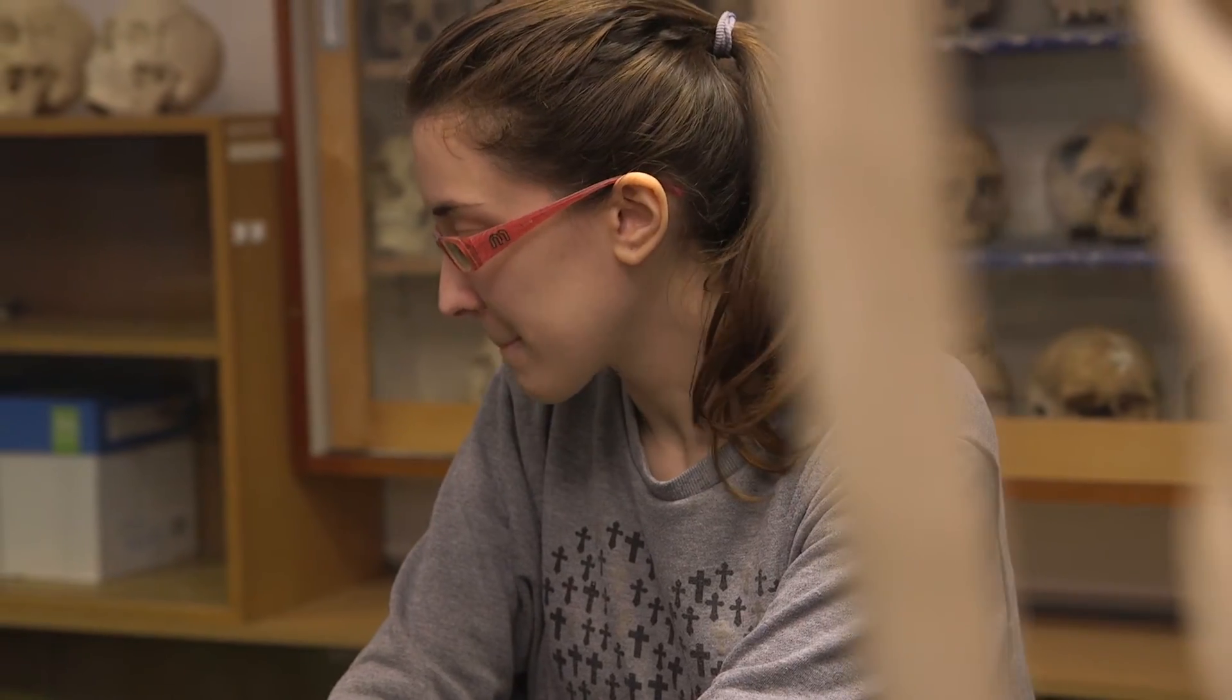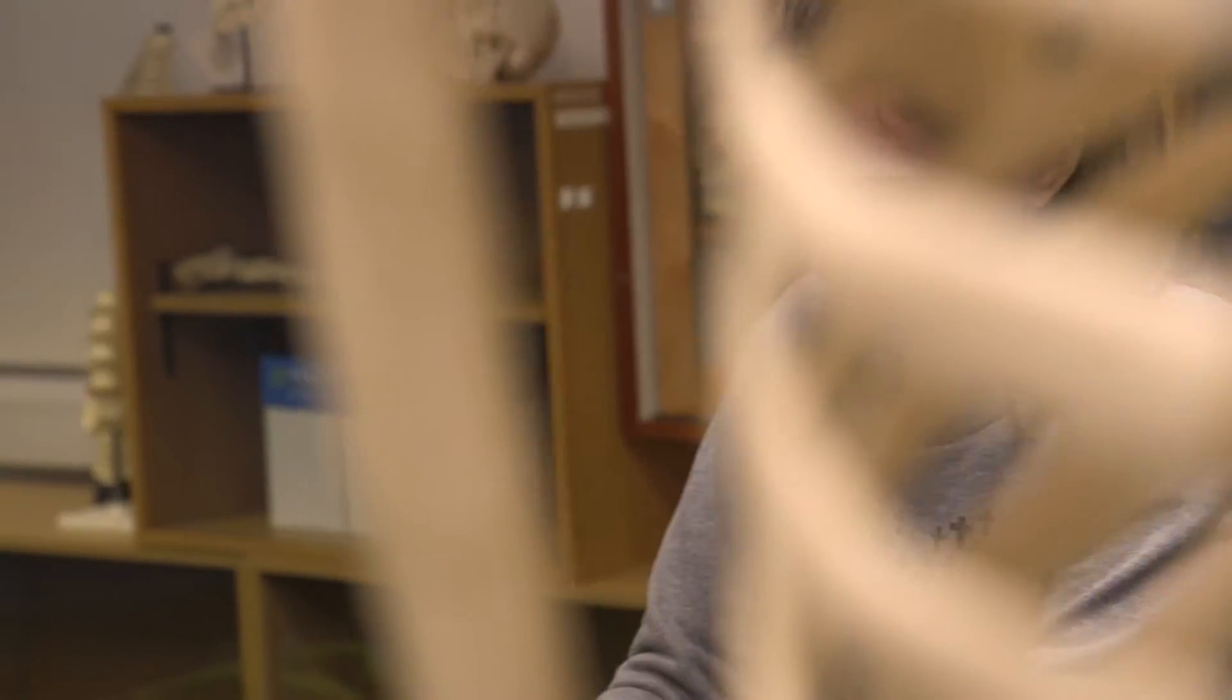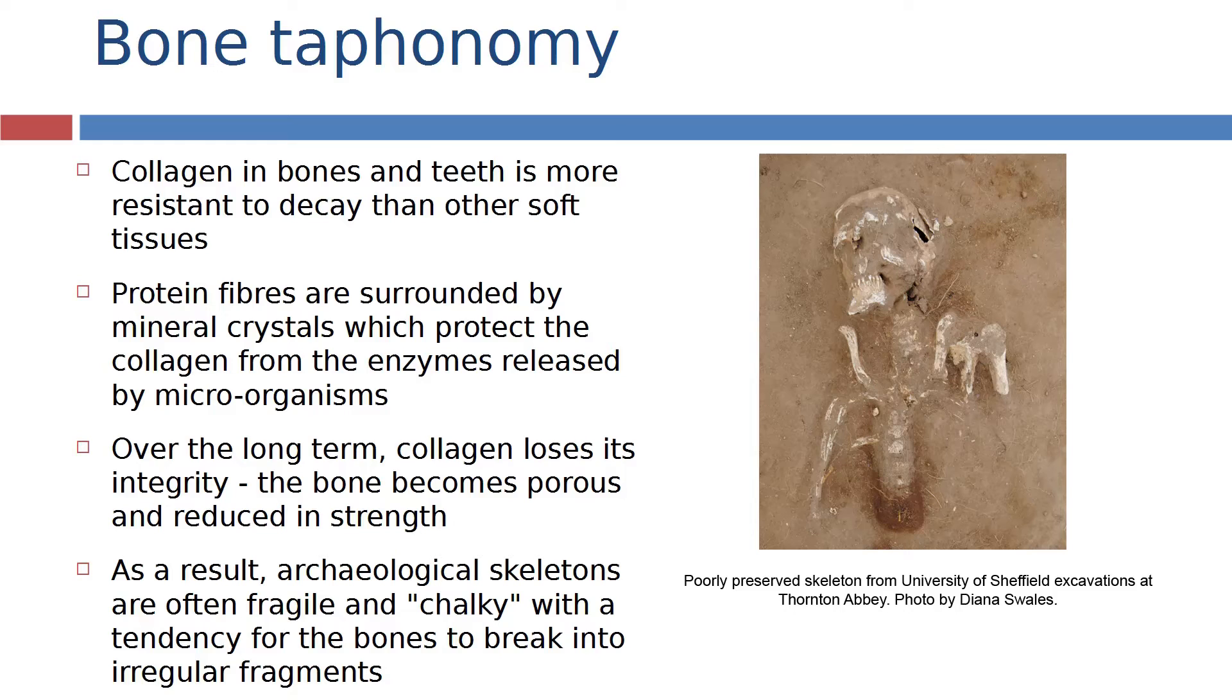We then have to consider what we can do with the methods that we have. There are some errors in the methods that we use and I'll talk about those a bit more as we go through this module. And what comes out the end is our archaeological data. So if you think about the entire process all the way through, it gives you a good idea and an understanding of what we can and can't say from human skeletal remains recovered from archaeological sites.